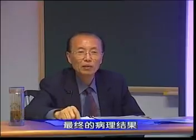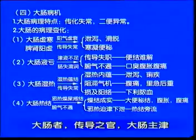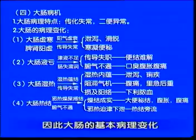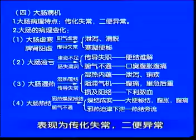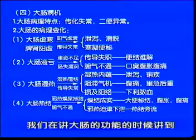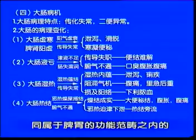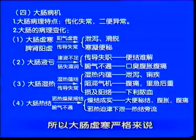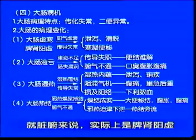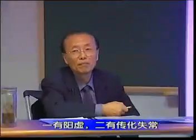小肠实热实际上是膀胱实热，因为主要是小便的改变。如果有心火上炎的改变，这叫心移热于小肠，以小便的改变为主。从发展规律看，心火下移小肠，最终的病理结果可以称之为小肠实热。下面讲大肠，大肠主传导，大肠的基本病理变化是传化失习，二便异常。大肠的基本病理变化一，大肠虚寒，大肠的功能同属于脾胃的功能范畴之内。